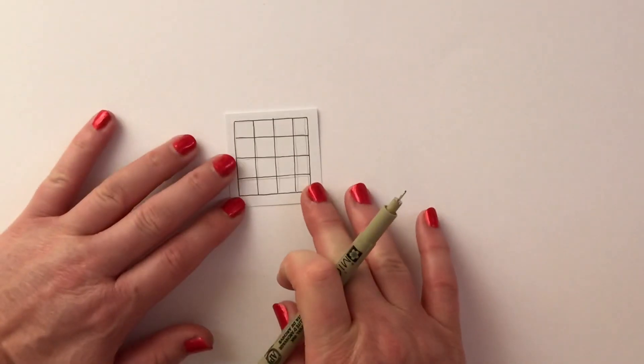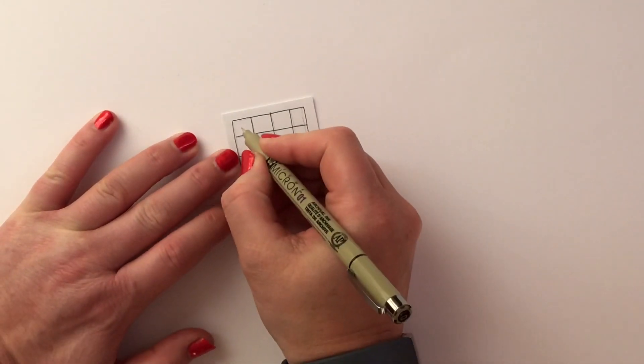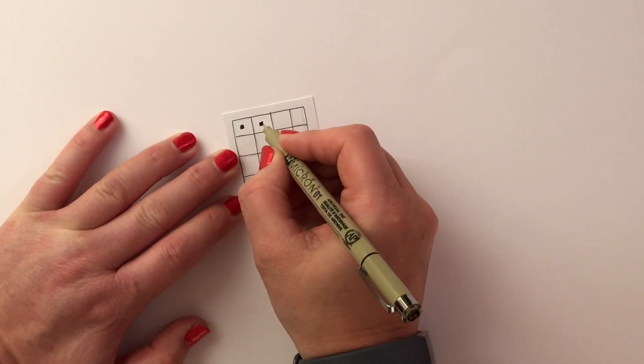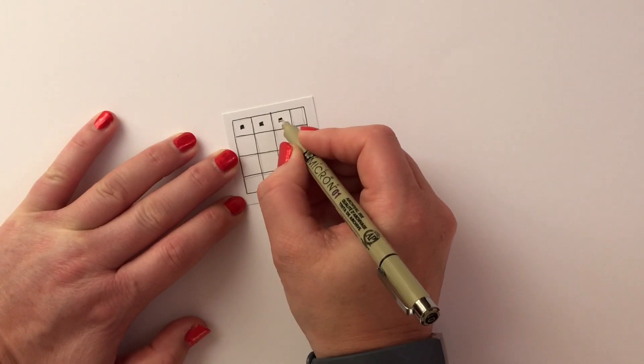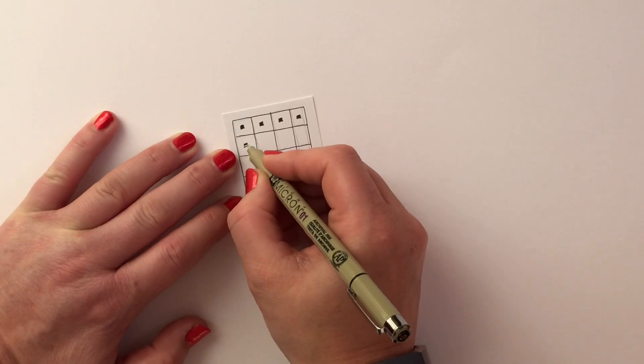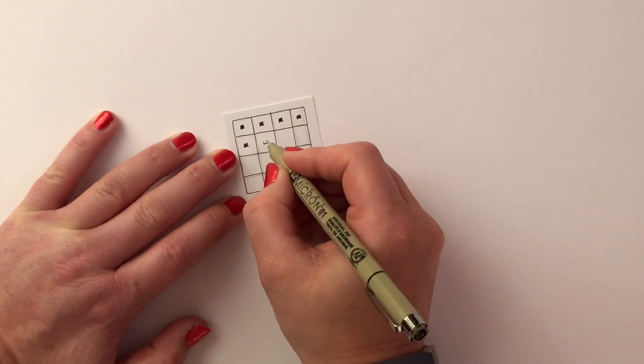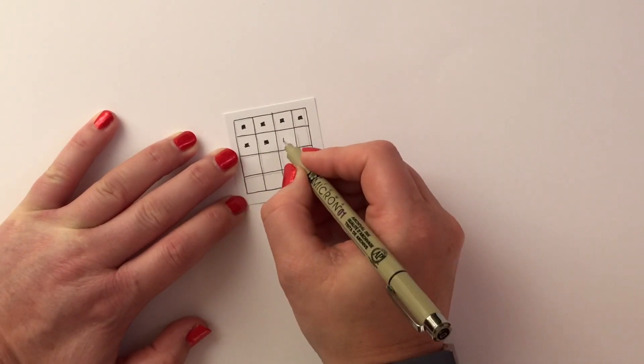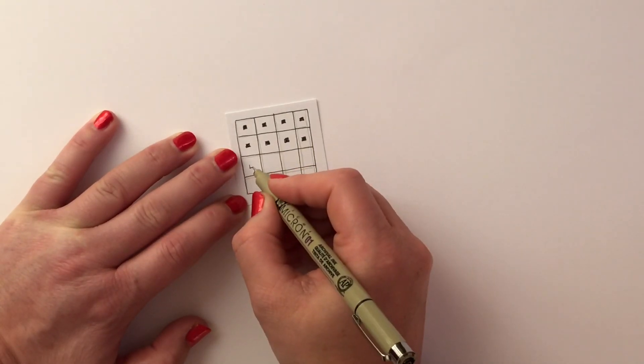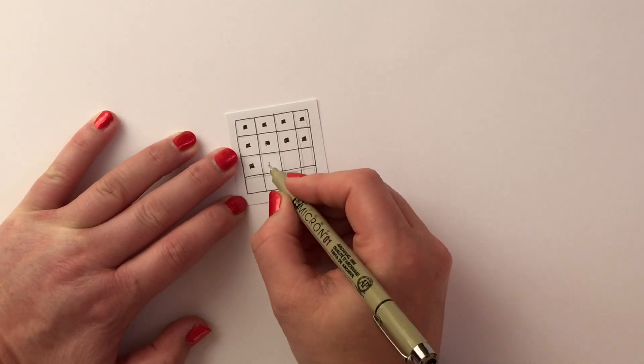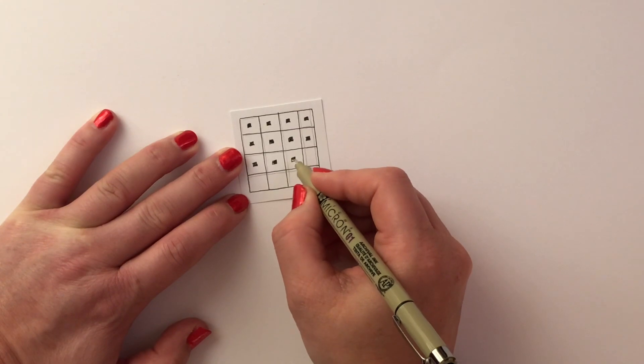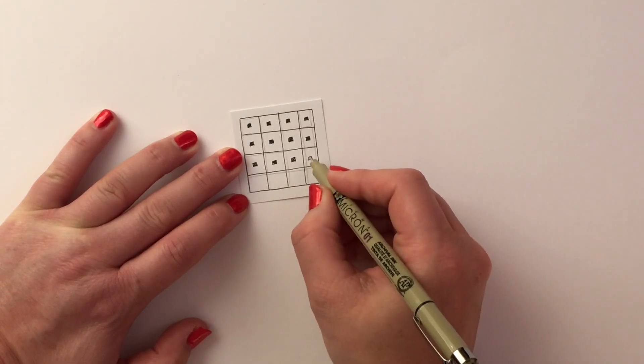Then in the center of each of the squares going across, I'm drawing a square that I'm coloring in black. You'll notice that I'm not too concerned as to whether it's an exact square because I'm going to have the opportunity to straighten it up in the next step.